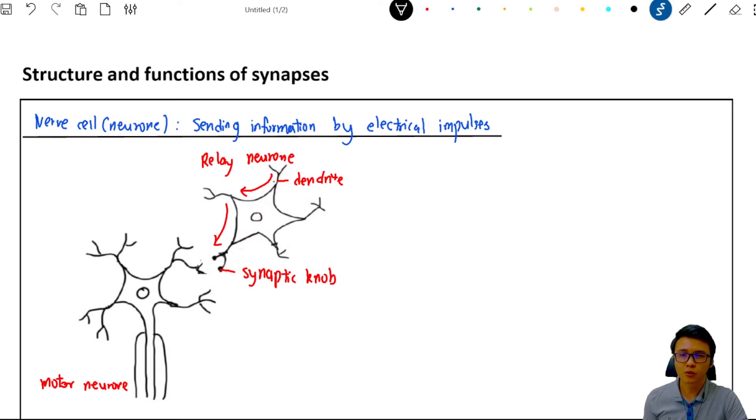So how do you remember this? We can memorize it in this way. From A to Z, D or S come first. D come first, right? So dendrite is always the starting point for the nerve impulse to be transmitted from this starting point dendrite to the synaptic knob.